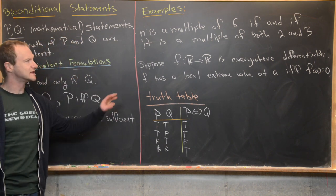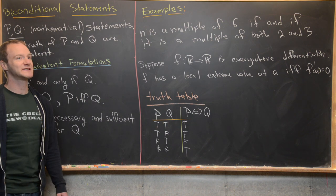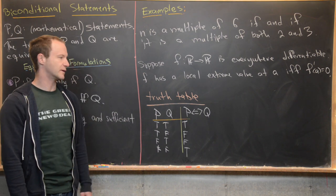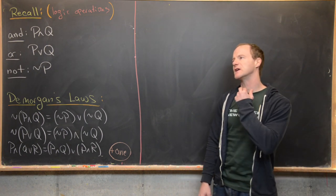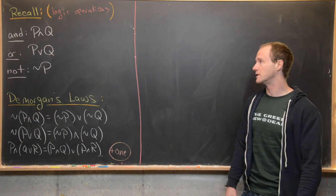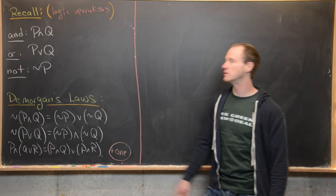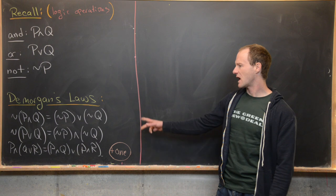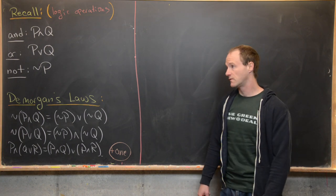There's one last thing to do: look at compound statements and the arithmetic of logical operations, along with some truth tables. By compound, I mean combining multiple statements using our logical operations from previous videos — the AND, OR, and NOT rules, denoted by P ∧ Q, P ∨ Q, and ¬P respectively.